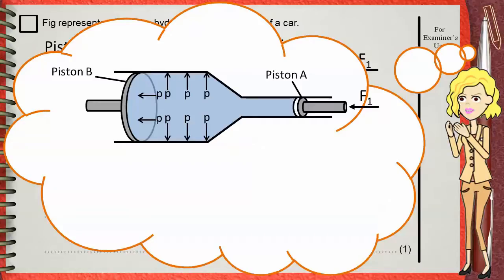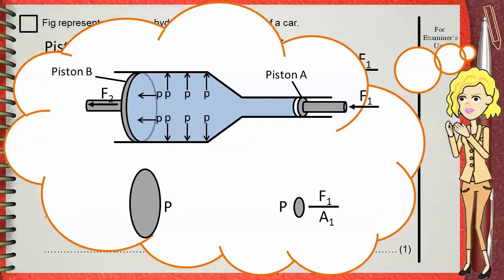This pressure will push piston B with force F2 outwards. Force F2 is not equal to force F1. Force F1 is applied to the small area of piston A, causing a pressure. However, the same pressure is applied on the large area of piston B. Since pressure is equal on both pistons, force 1 divided by area 1 equals force 2 divided by area 2. Since area 2 of piston B is much greater than area 1 of piston A, force F2 will be bigger than F1.